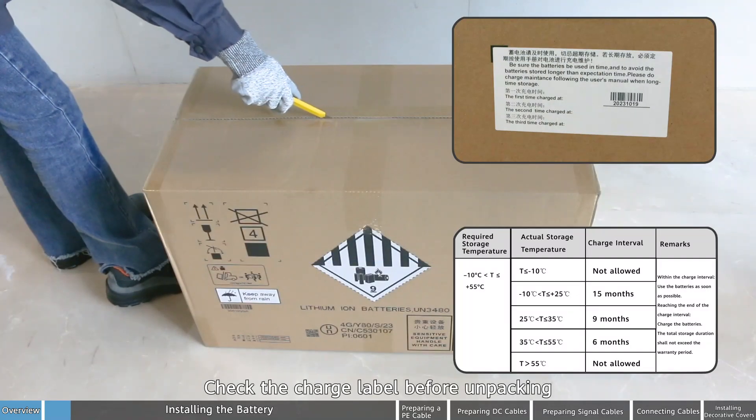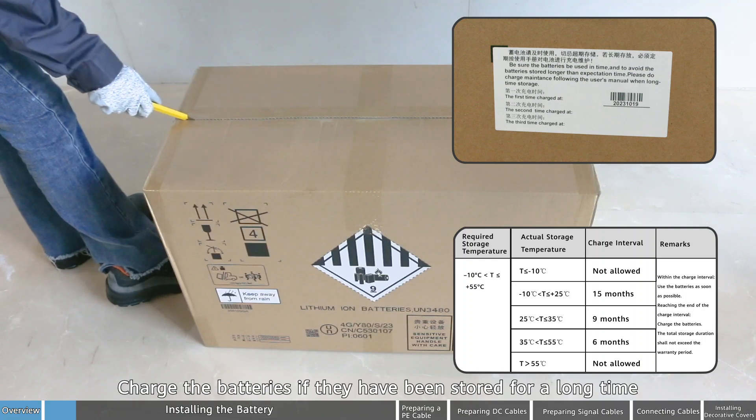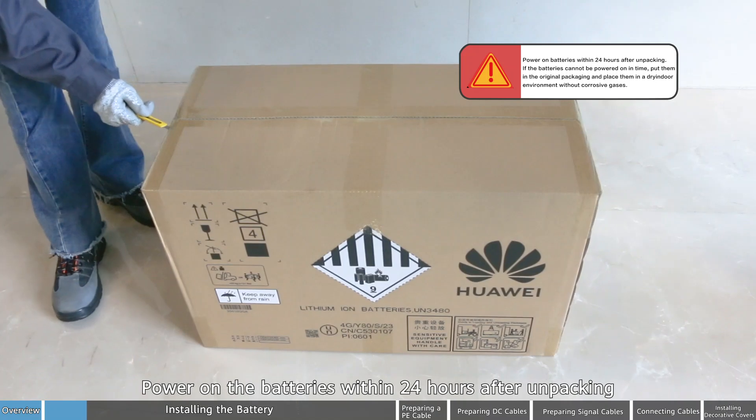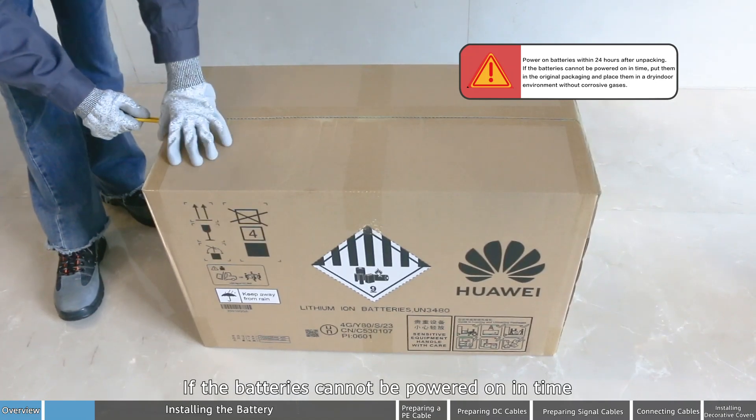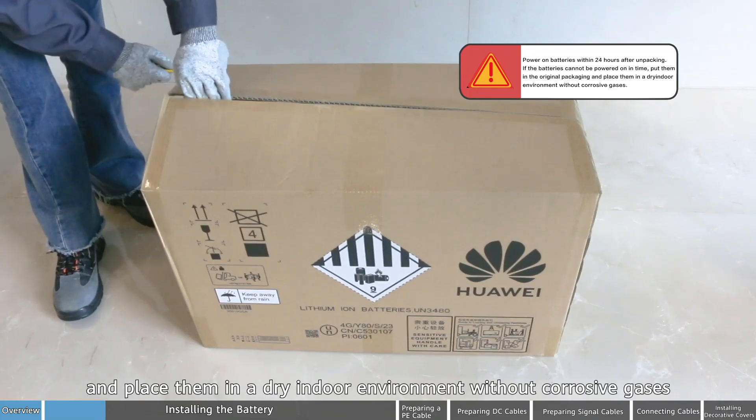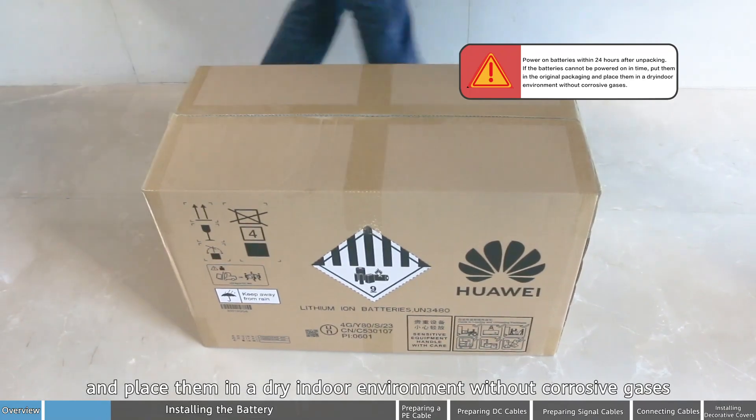Check the charge label before unpacking. Charge the batteries if they have been stored for a long time. Power on the batteries within 24 hours after unpacking. If the batteries cannot be powered on in time, put them in the original packaging and place them in a dry indoor environment without corrosive gases.